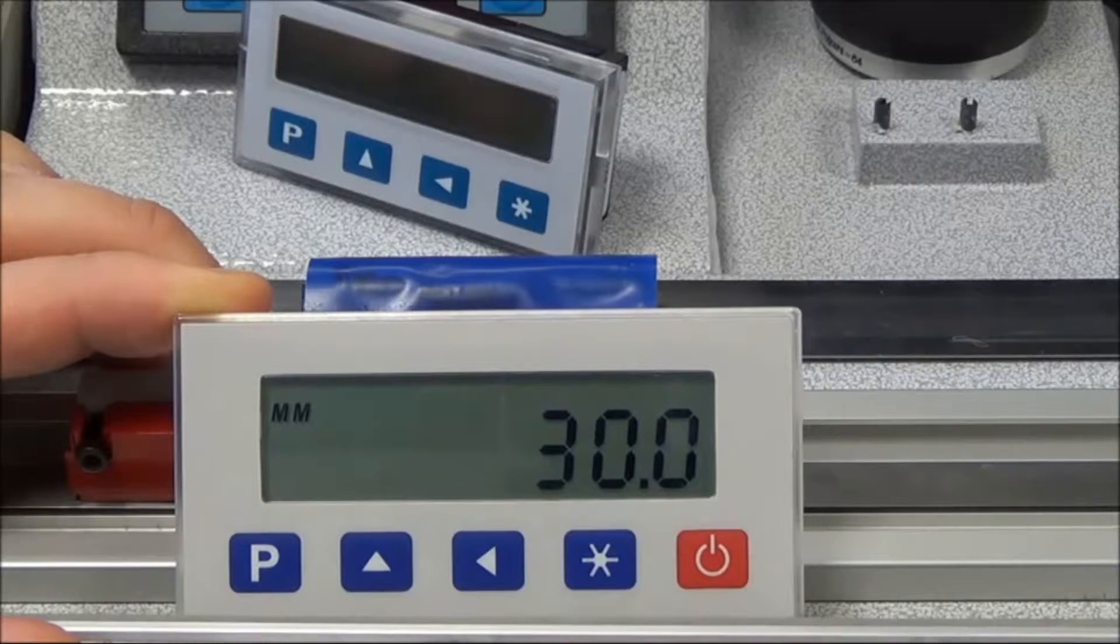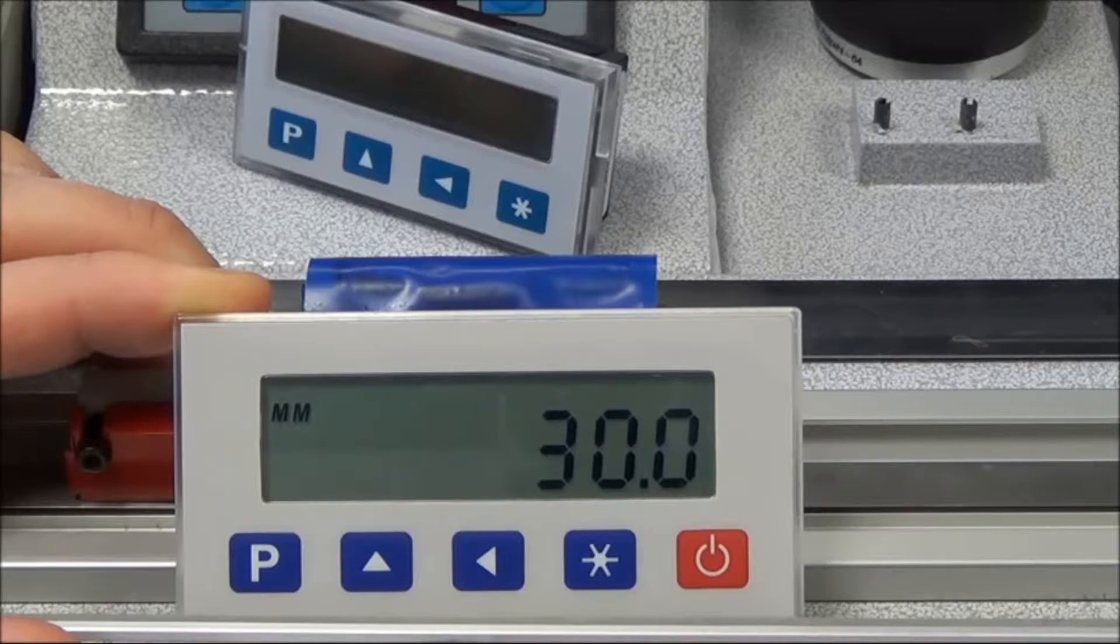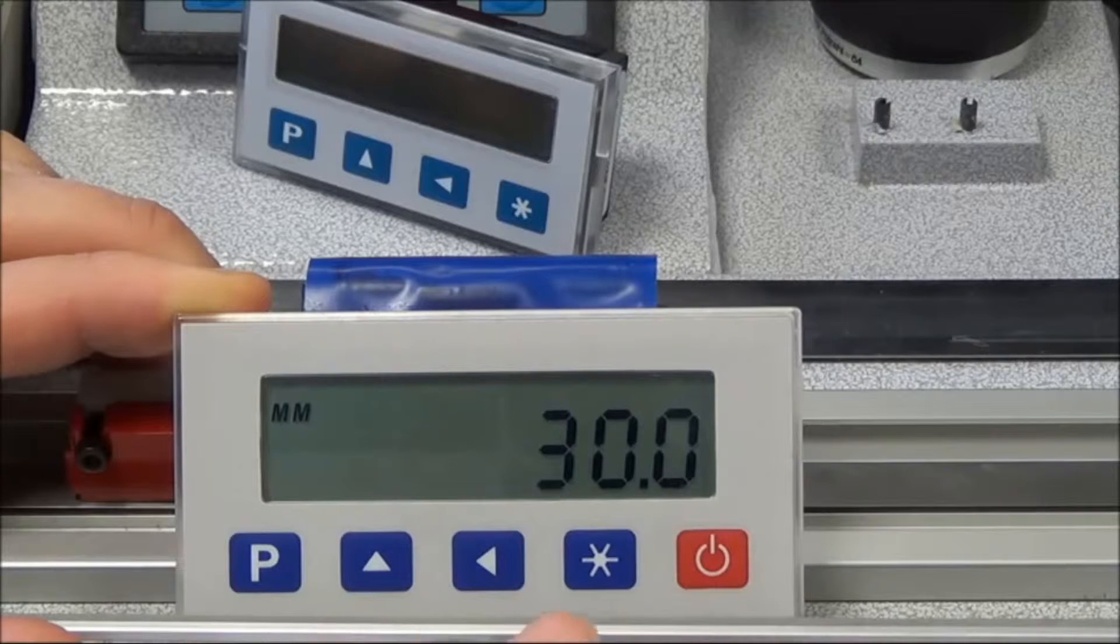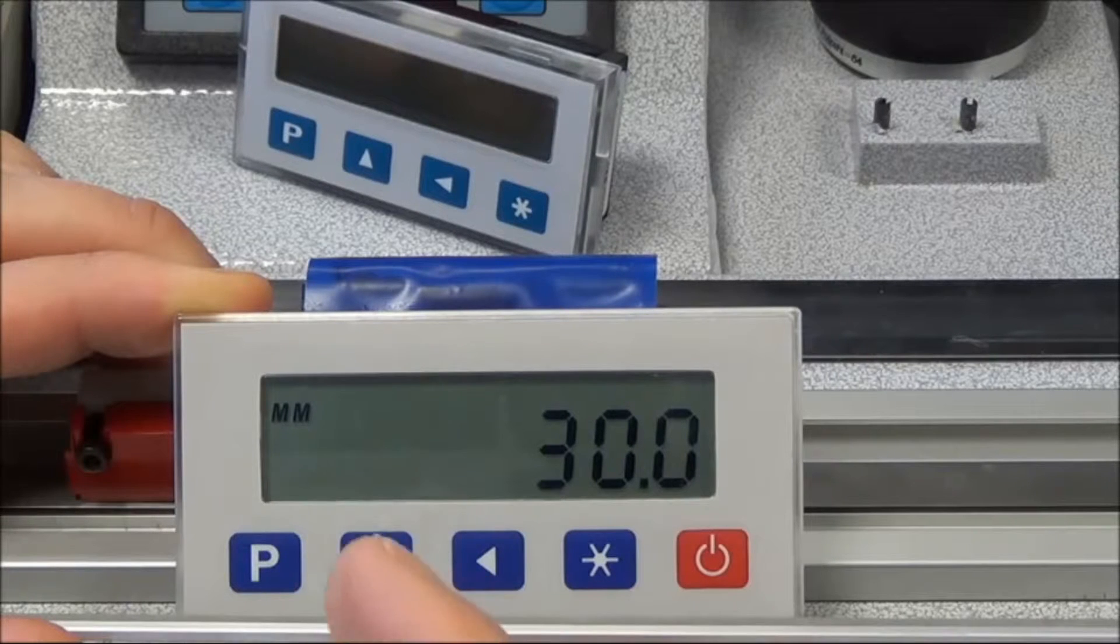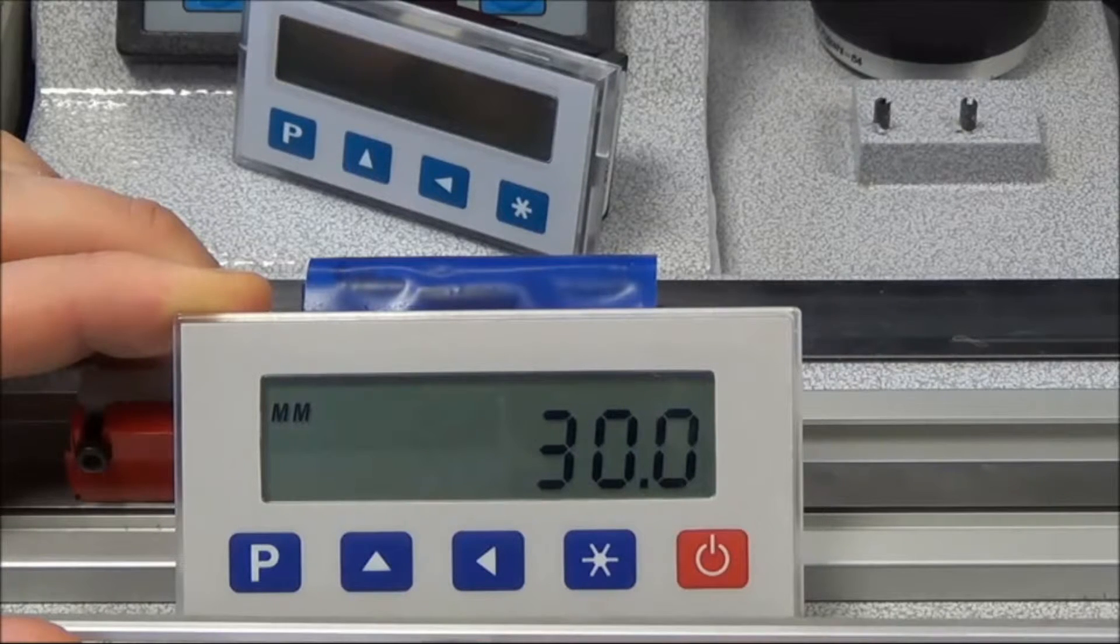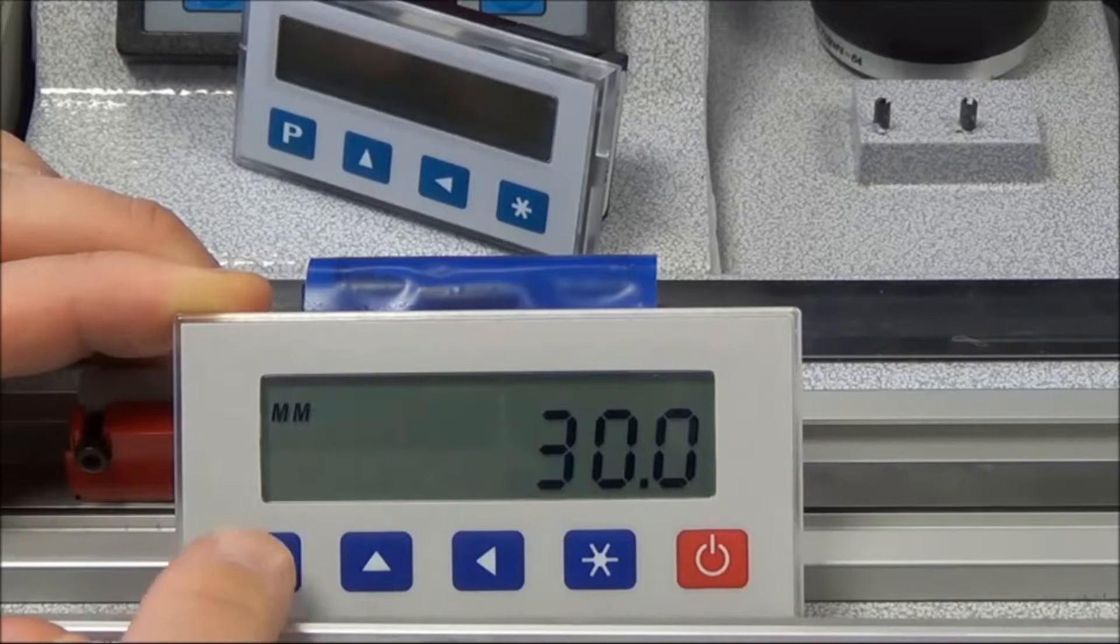He doesn't want the operator to press that anywhere else other than at the datum point once the machine is initially set. So what you do now is you can take out the function of the star button to datum it by going into the programming.